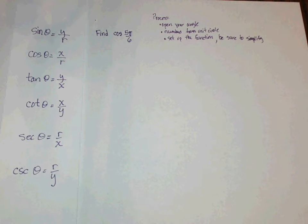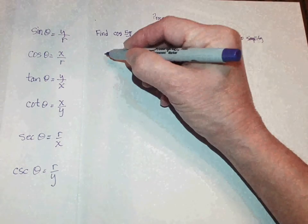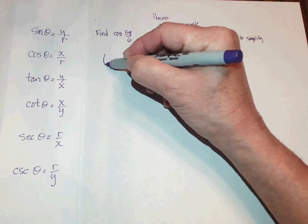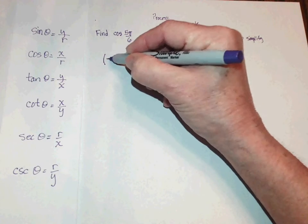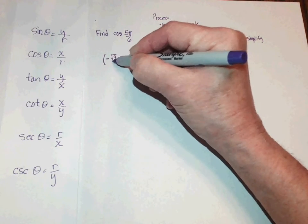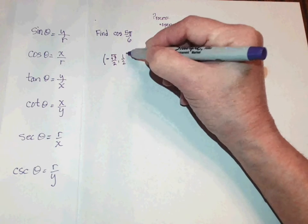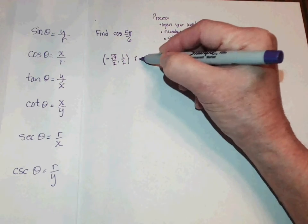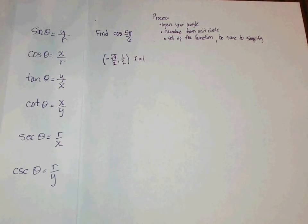If you look at your sheet of the unit circle, you can easily see where 5 pi over 6 opens up. The numbers that come off the unit circle, and r always equals 1 because this is the unit circle of radius 1.